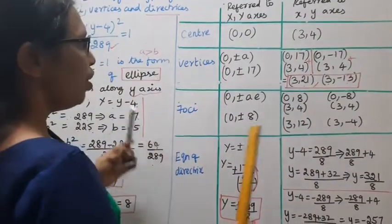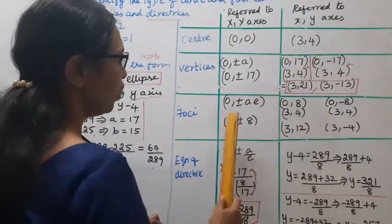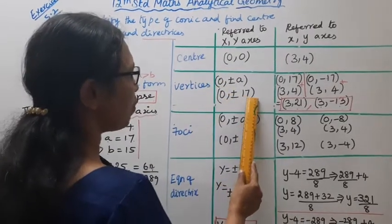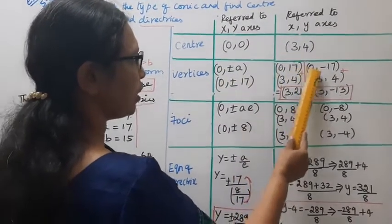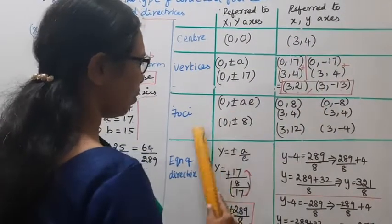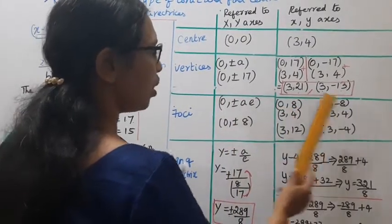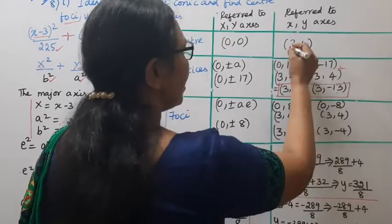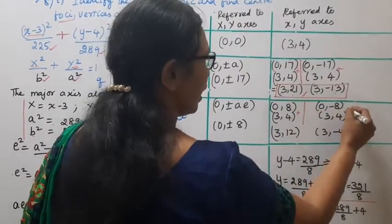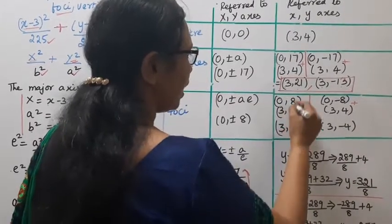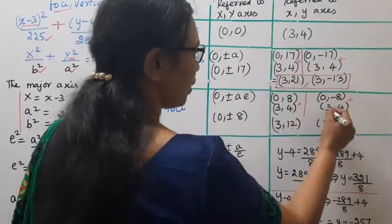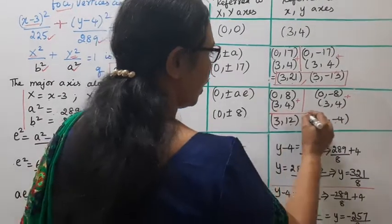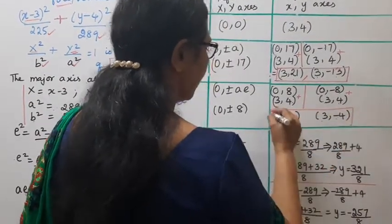Foci: 0, ±8. Adding the shifts: 0 plus 3 equals 3, 8 plus 4 equals 12, and 3, -8 plus 4 equals -4. So foci are 3, 12 and 3, -4.